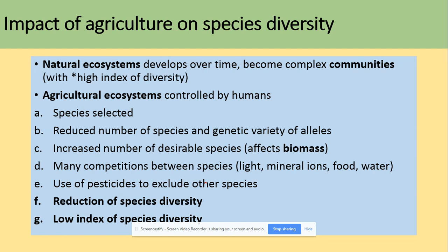So what is the impact of agriculture on species diversity? What we need to remember is the fact that natural ecosystems will develop over time. They'll become more complex communities. So what's the definition of community? All of the populations. So then they will have a high index of diversity.